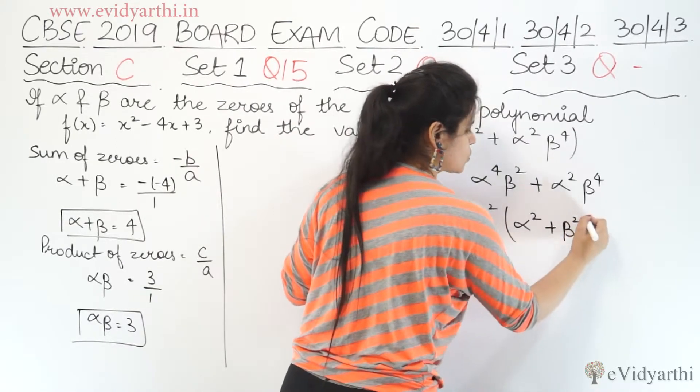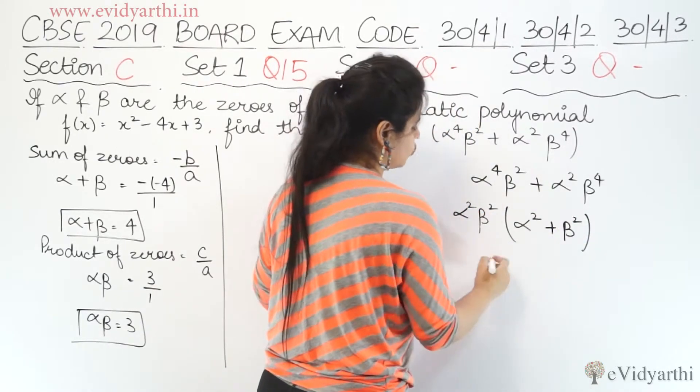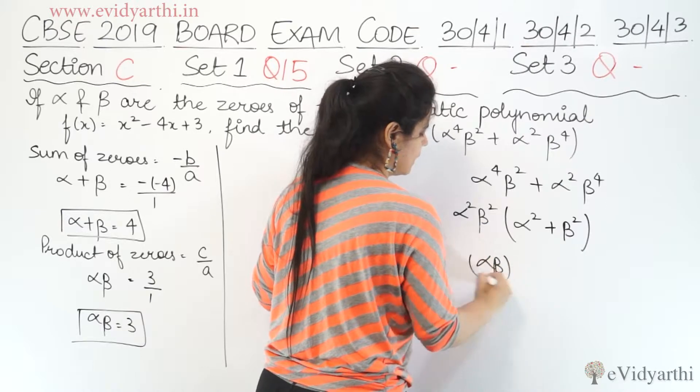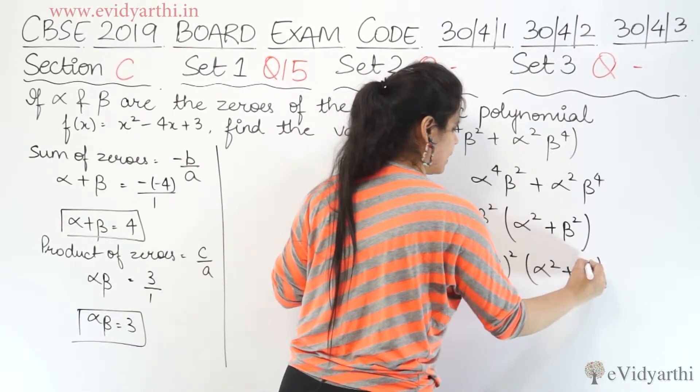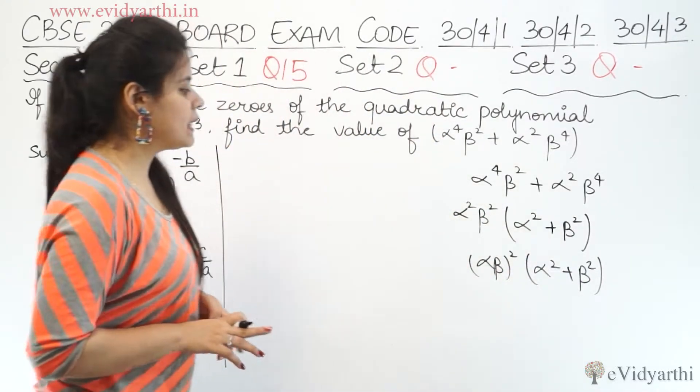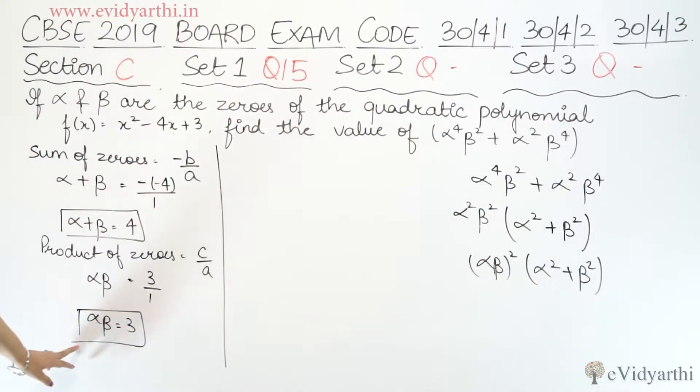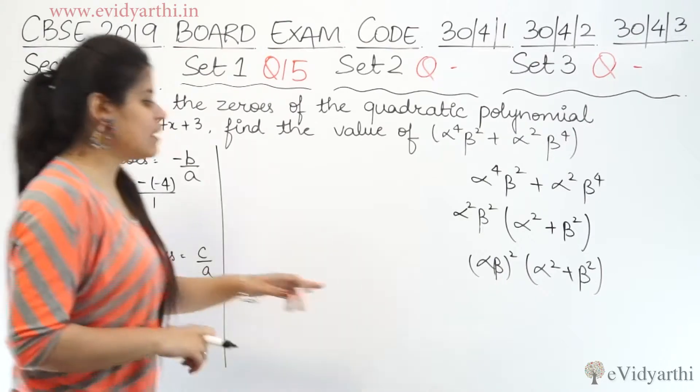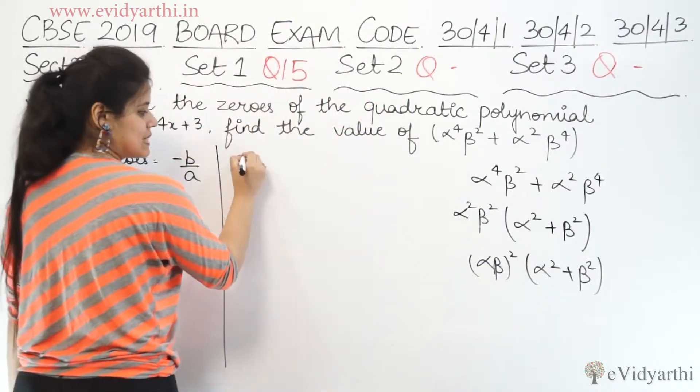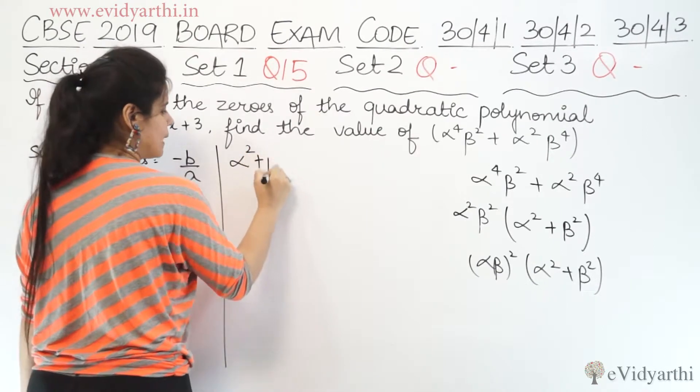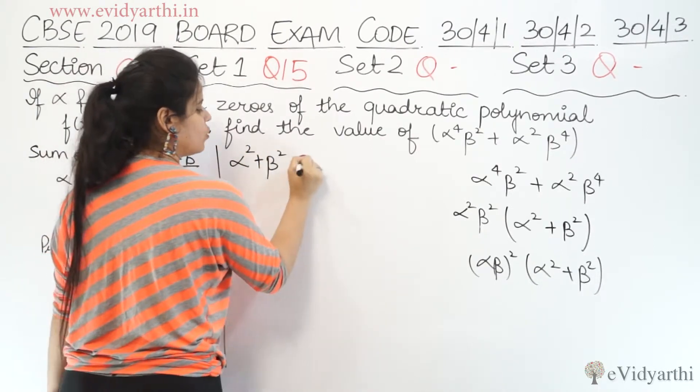Both alpha square and beta square are common. Now here alpha square plus beta square, we need alpha square plus beta square's value.